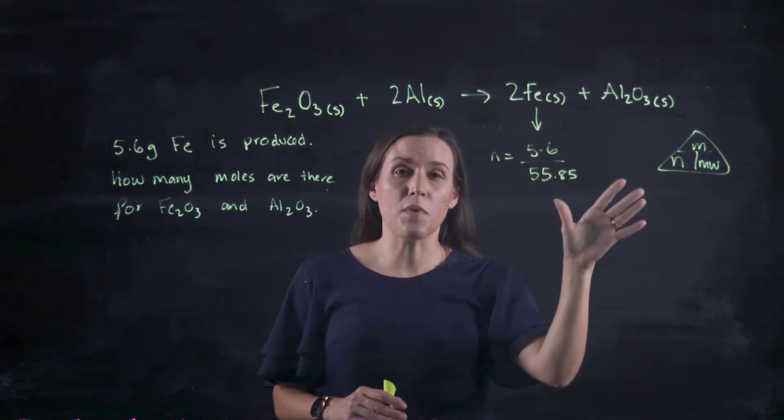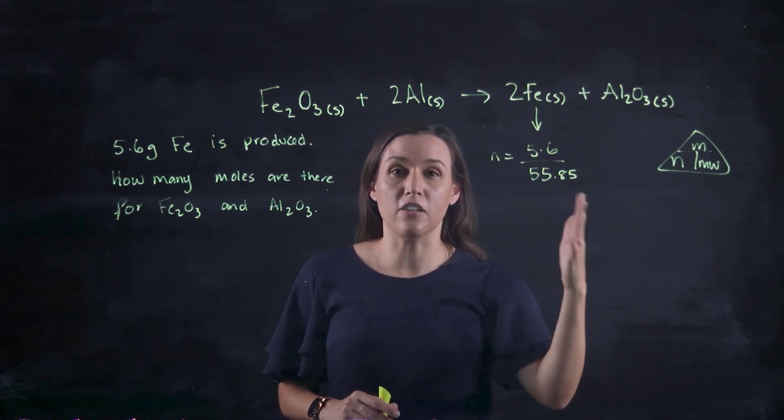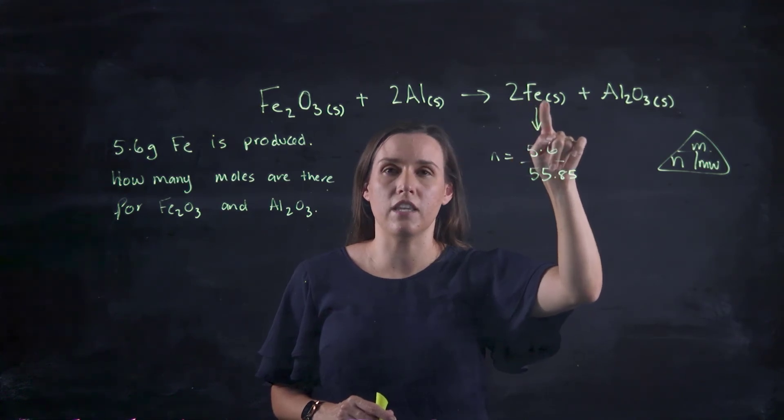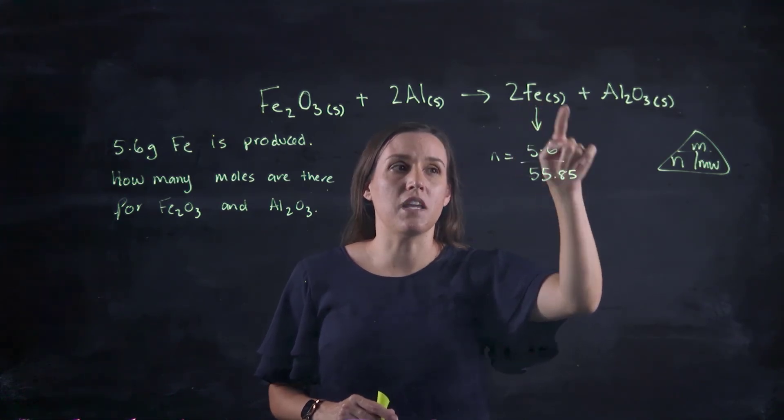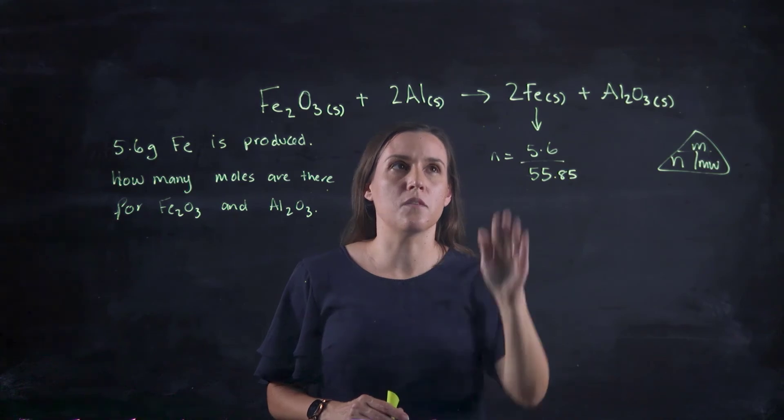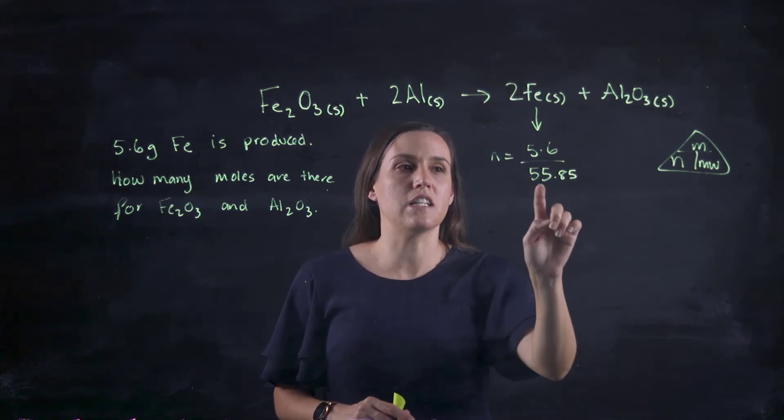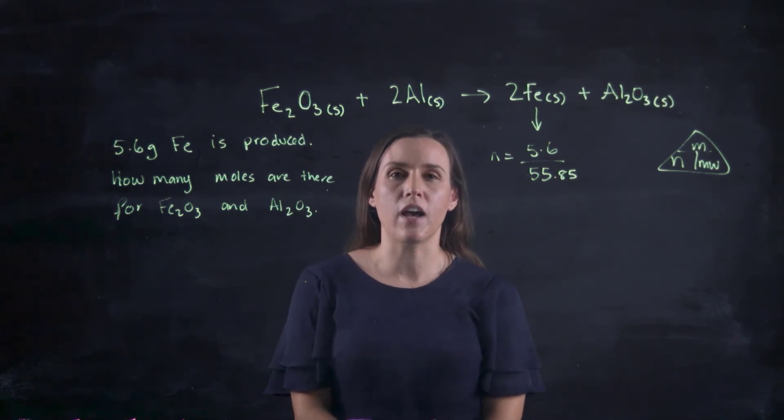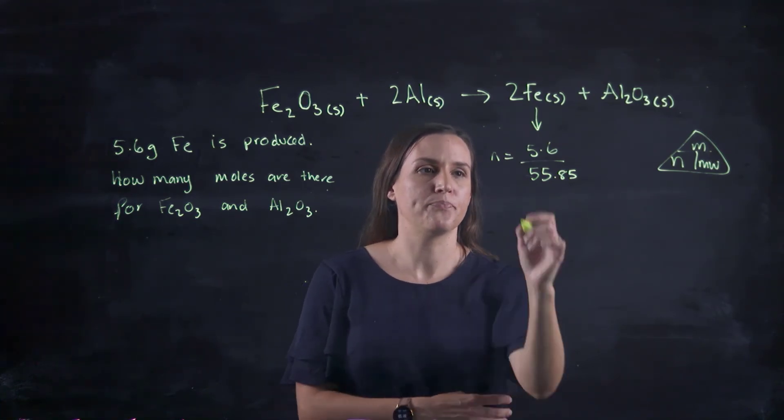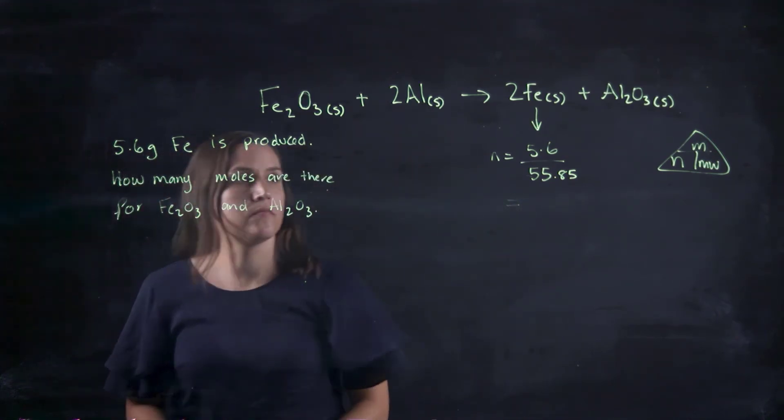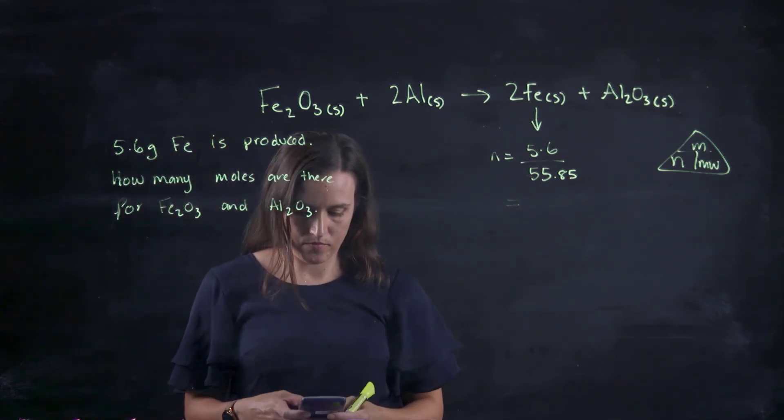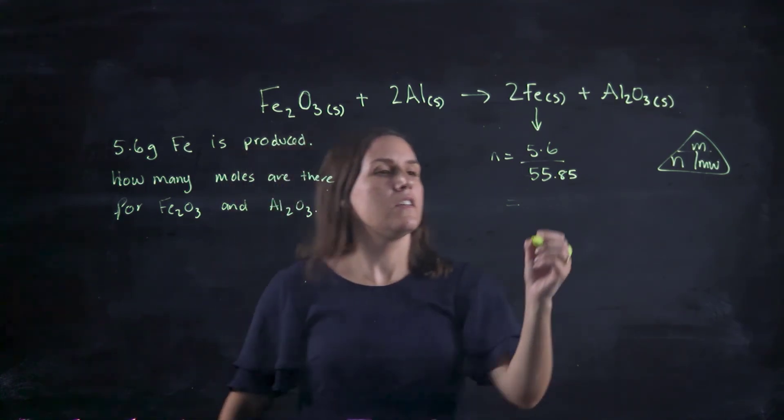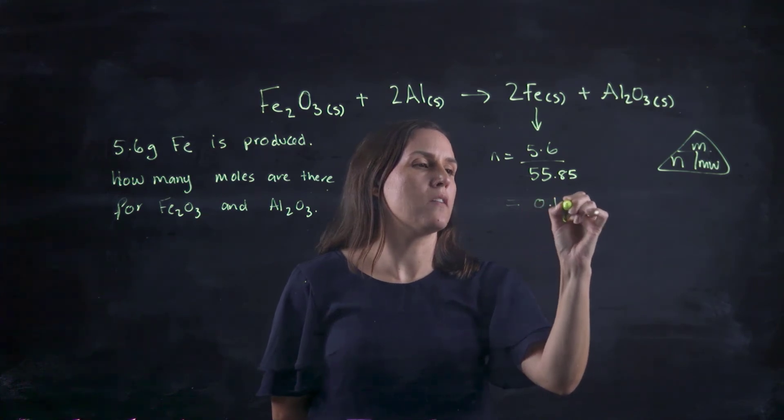Now just remember, you may already know this, but I'll just remind you that although there's a coefficient of two out the front of the Fe, that doesn't mean that we need to change that molecular weight because the molecule is still Fe. So I only need to write down one atom for Fe, which is 55.85 from the periodic table.